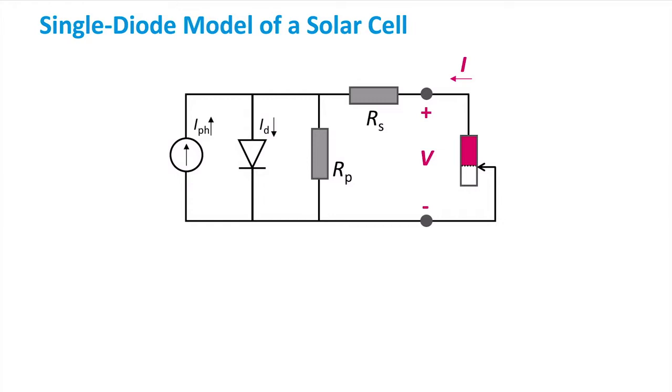The first thing you may notice is the current source on the left side of the diagram. This represents the photocurrent generated through illumination, which we call here IPH. Ideally, we want to pass the photocurrent to our load represented in purple on the right.